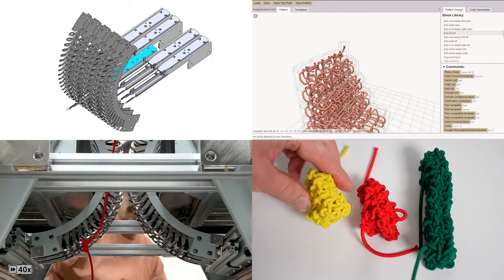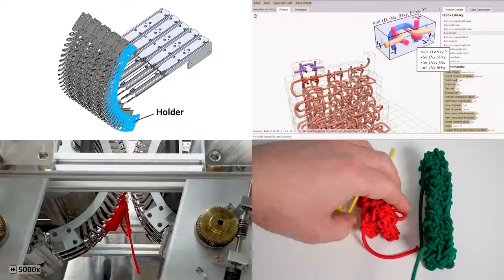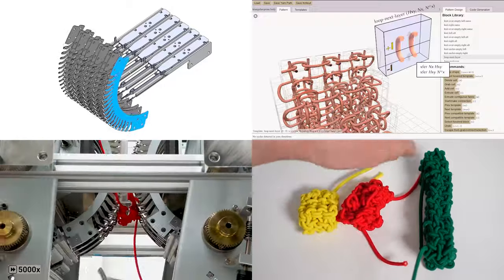We introduce Solid Knitting, a new fabrication technique that combines the layer-by-layer volumetric approach of 3D printing with a stitched structure of knitting to produce solid 3D objects.